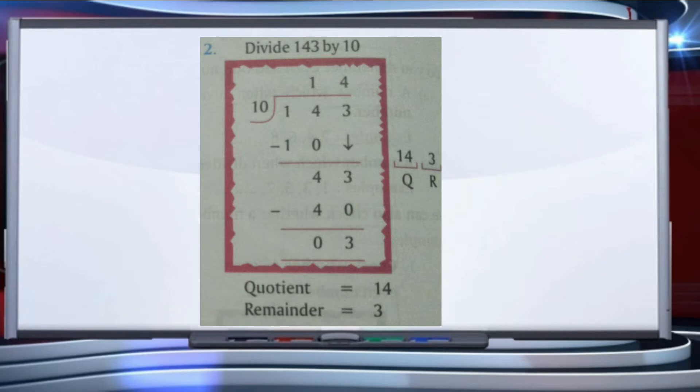The second question is: divide 143 by 10. When we divide 143 by 10, 10 ones are 10, 14 minus 10 is 4, bring 3 down. 10 fours are 40. 43 minus 40 is equal to 3. The quotient is 14 and the remainder is 3.